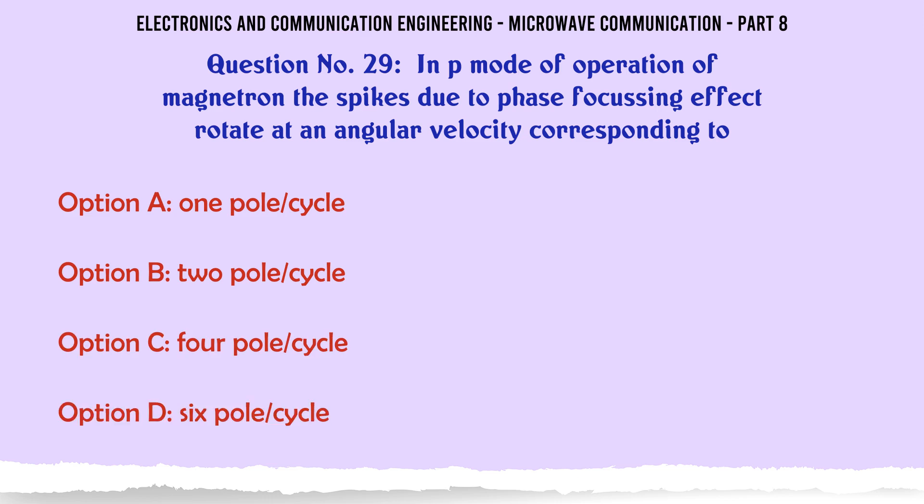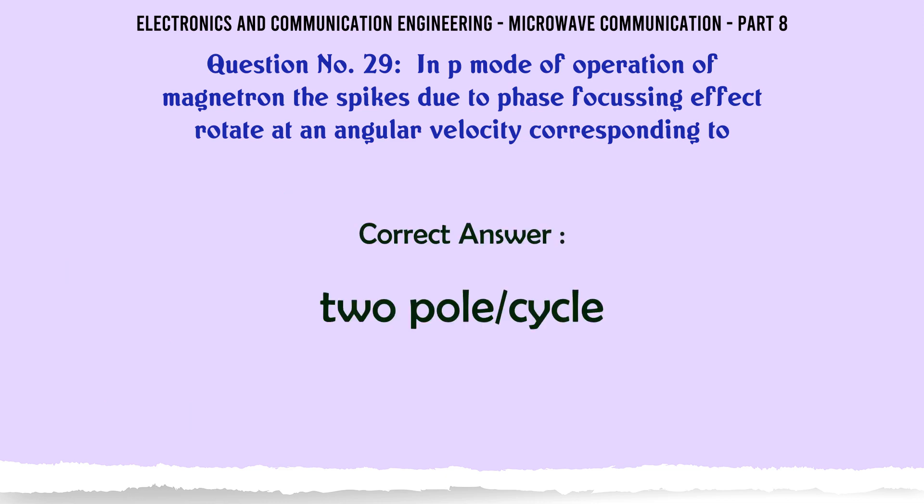In π mode of operation of a magnetron, the spikes due to phase focusing effect rotate at an angular velocity corresponding to — A. 1 pole cycle, B. 2 pole cycle, C. 4 pole cycle, D. 6 pole cycle. The correct answer is 2 pole cycle.